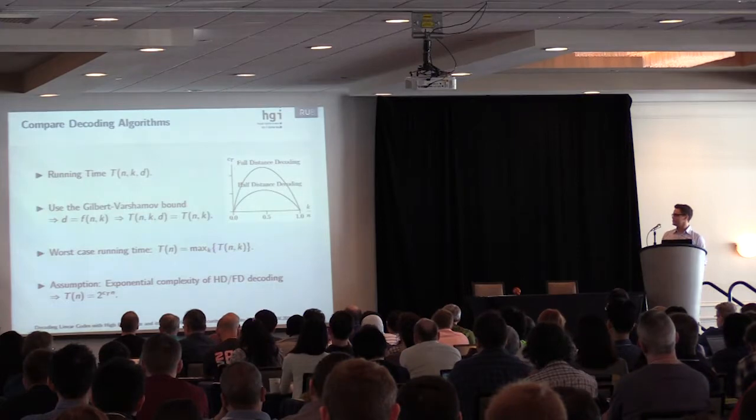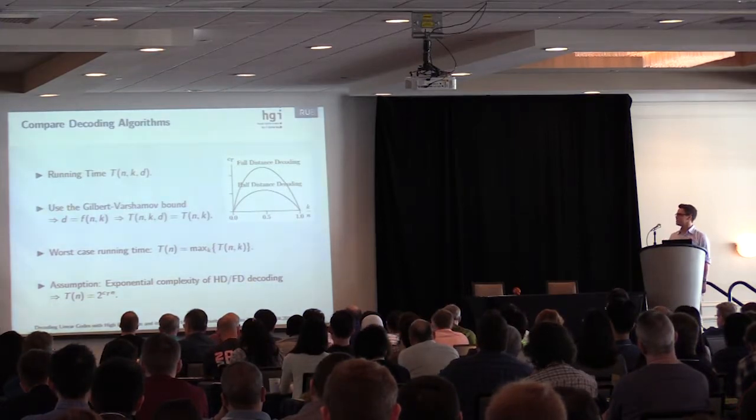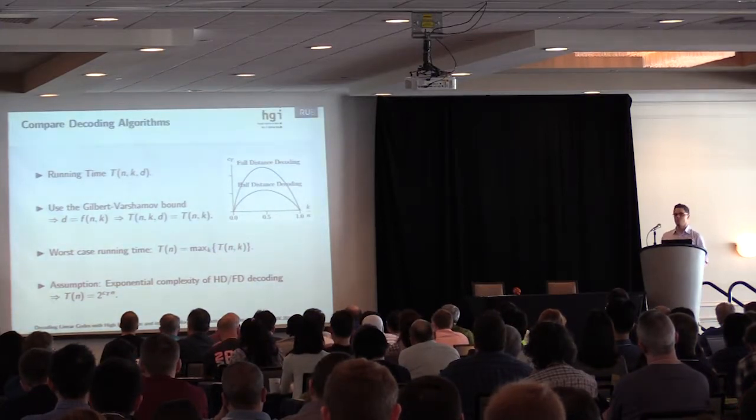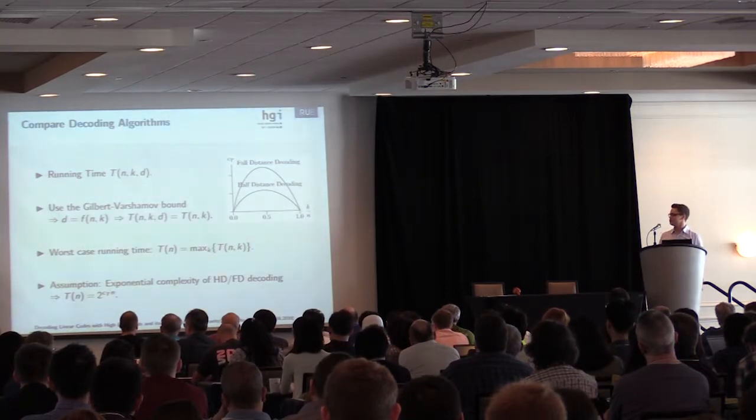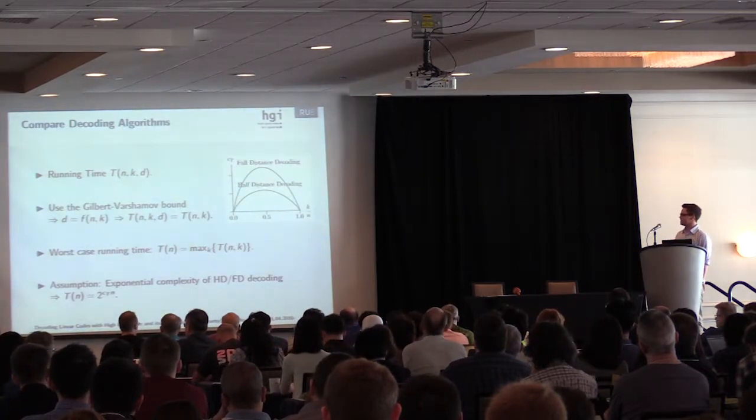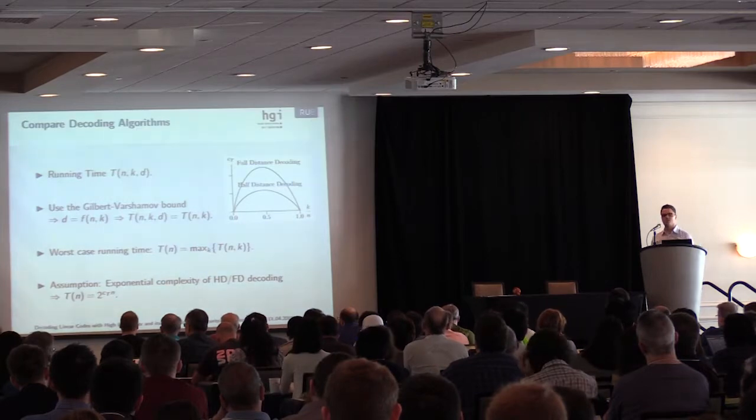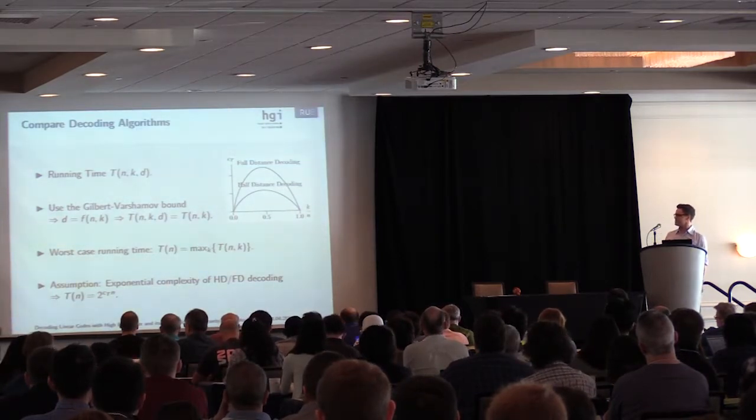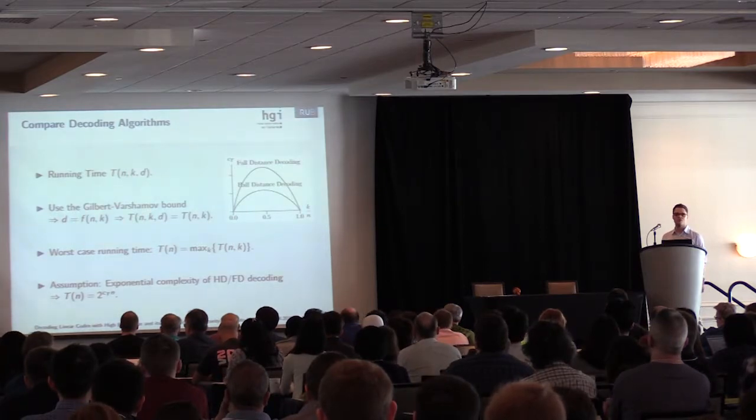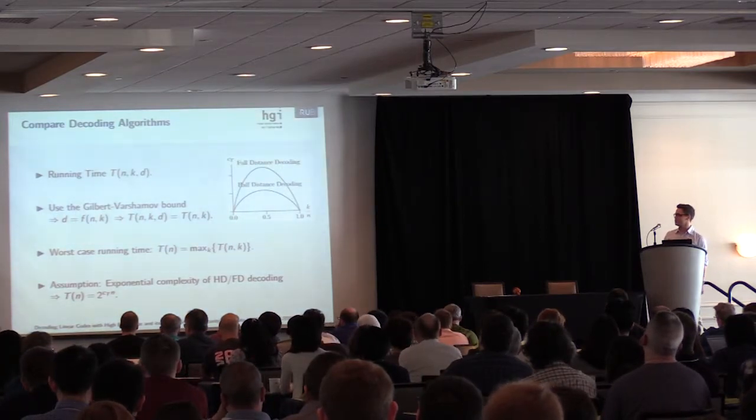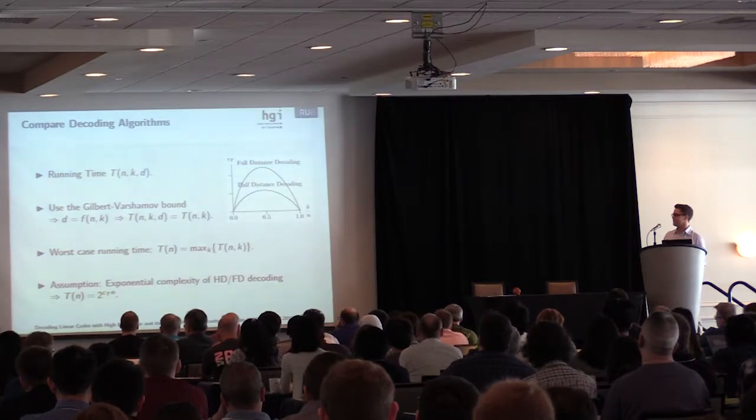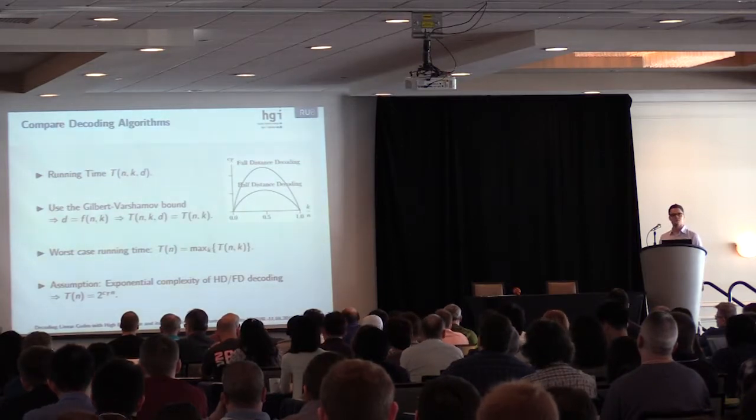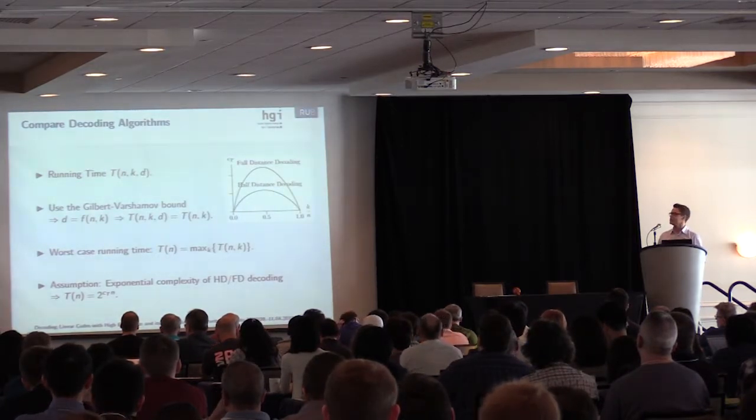In the third and last step, we assume exponential complexity and write the running time as 2 to the c_T times n, where c_T is some constant which will be our measurement for the complexity. So the smaller the constant, the faster the algorithm, the better the algorithm.